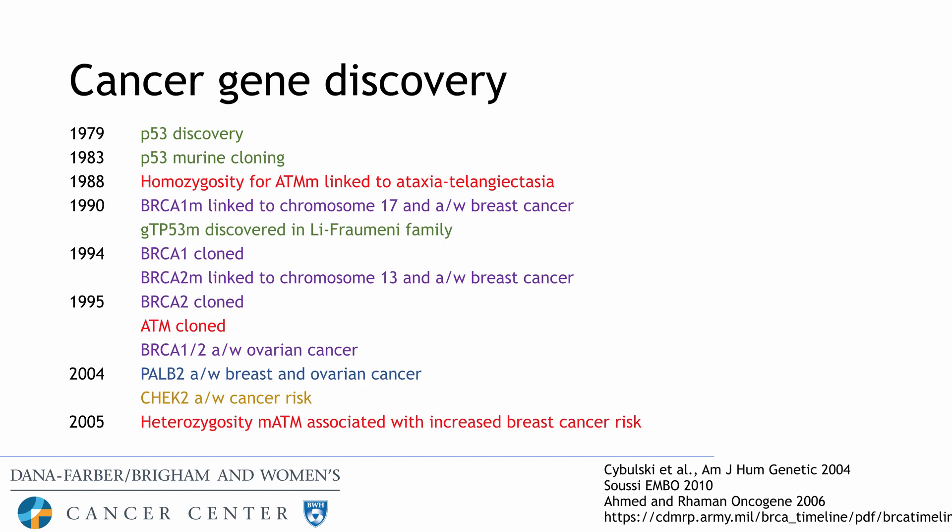Along with the clinical description of hereditary cancer syndromes, there were many cancer gene discoveries between the late 1970s and 2000s. This includes the discovery of TP53, a gene associated with breast cancer, leukemia, and sarcoma. The BRCA1 and BRCA2 genes were then identified and cloned in the 1990s.